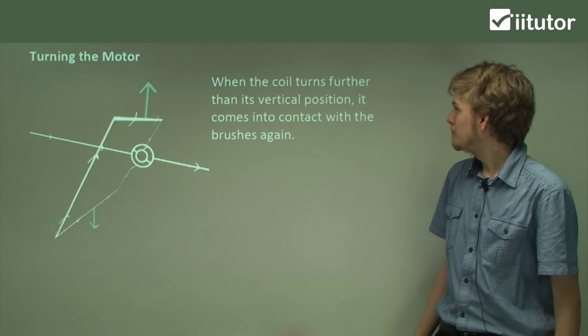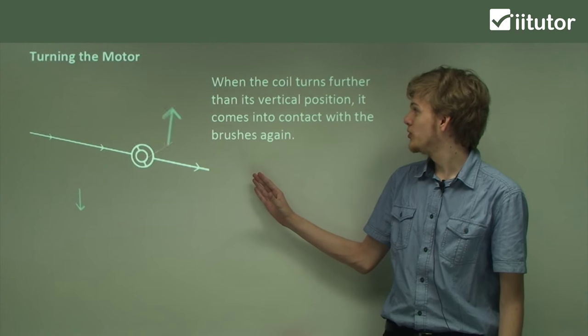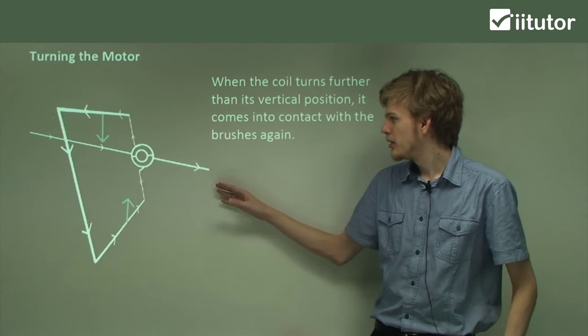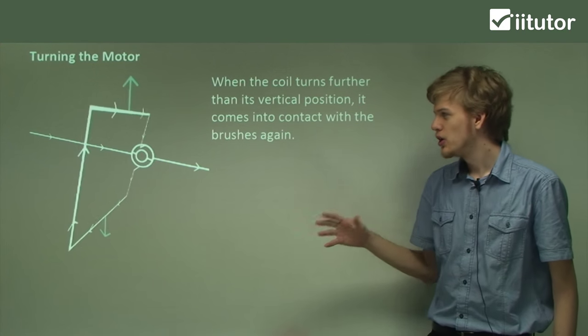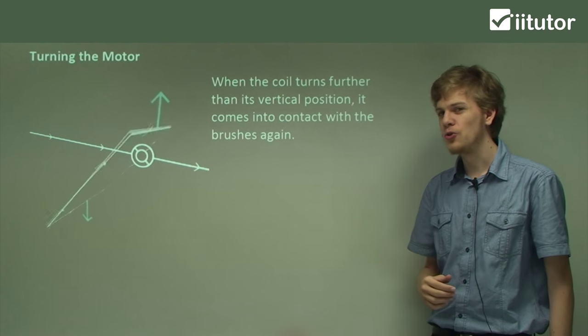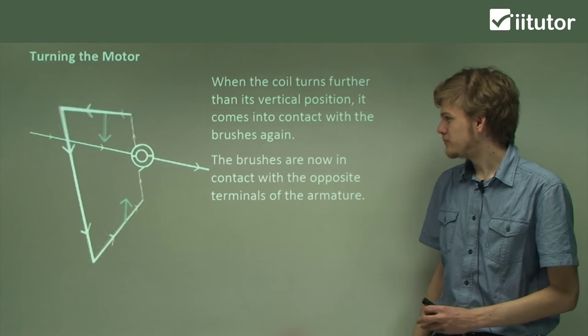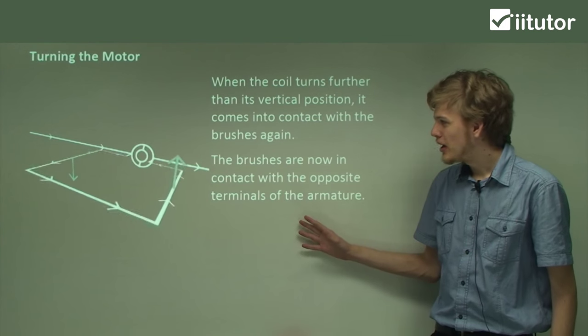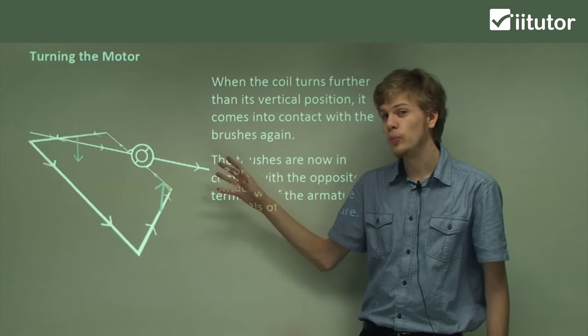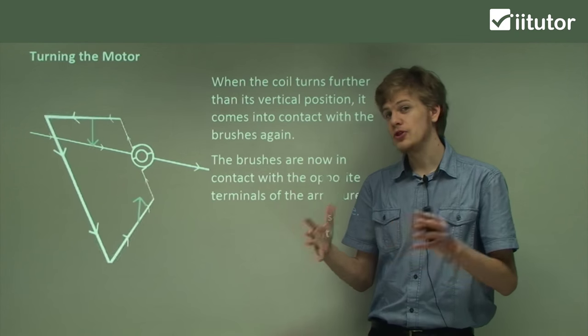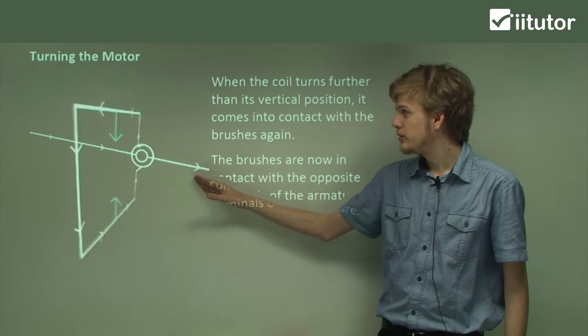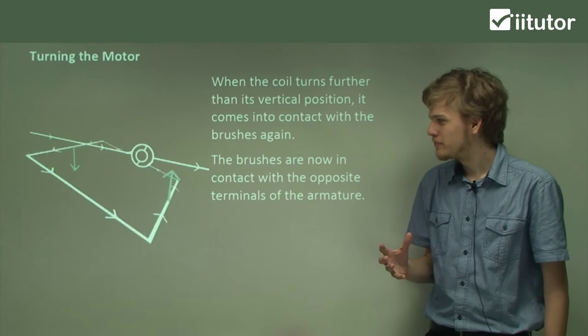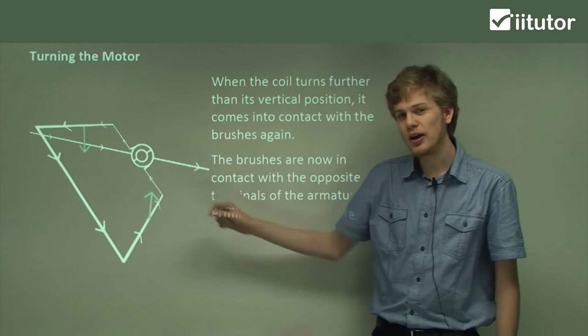We can see from this animation that when the coil turns further than the vertical position, then the external current coming the other way through the split ring commutator will change the forces that are acting on the coil. The brushes are now in contact with the opposite terminals of the armature. And you can see that every time the coil reaches its vertical position, and the split of the split ring passes over the external current, the current in the armature will change direction. You can see that the arrows suddenly change direction at this point.